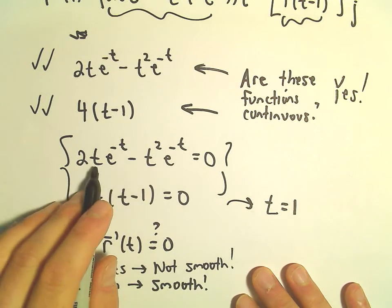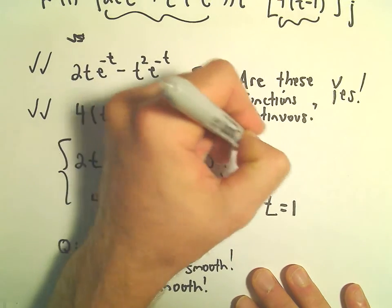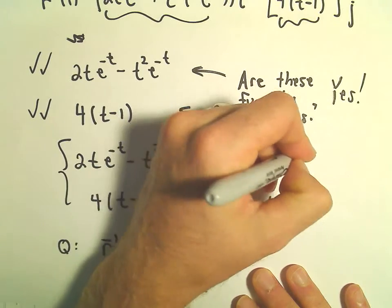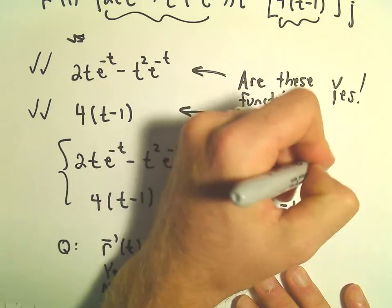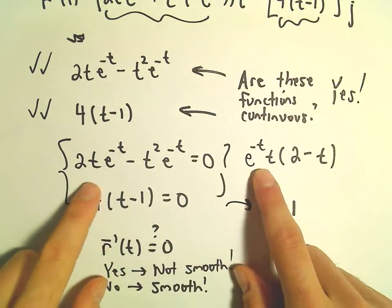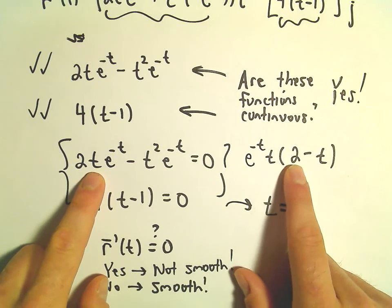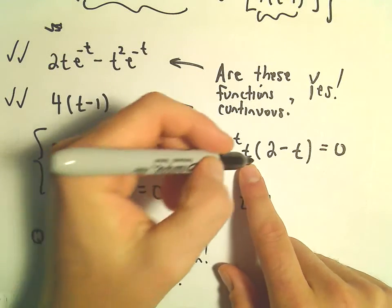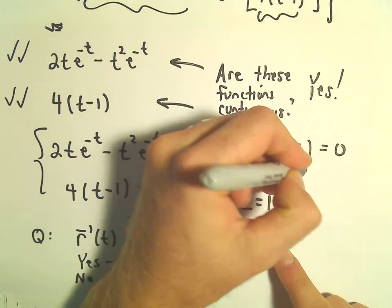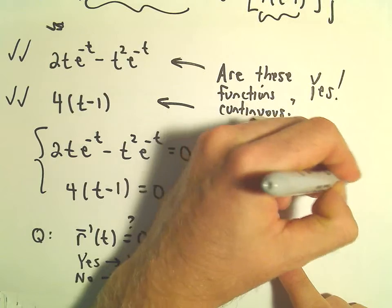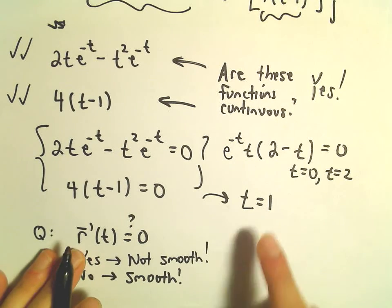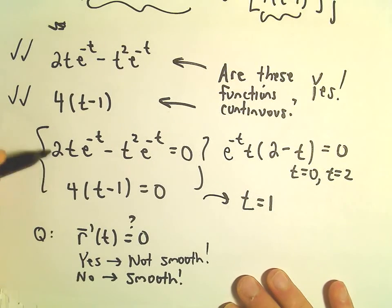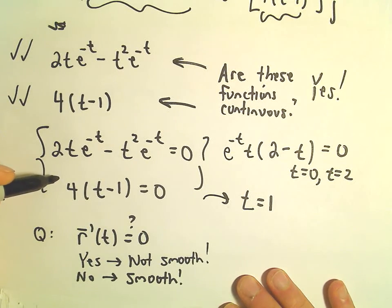I guess we could factor out the e to the negative t. We could pull out a t. And then we would have 2 minus t left over in our parentheses. The solutions for the first equation, we would get t equals 0 or t equals 2. The solution for the second equation is t equals 1. There's no value of t that makes both equations equal to 0 simultaneously.